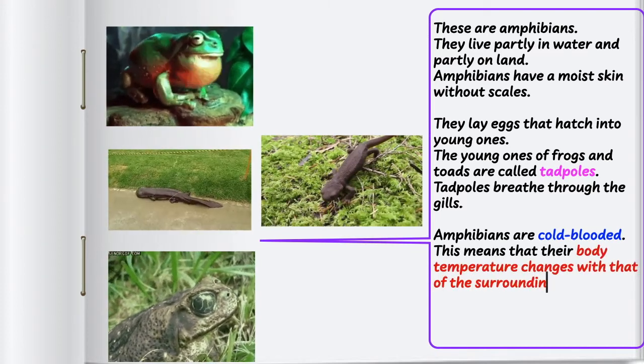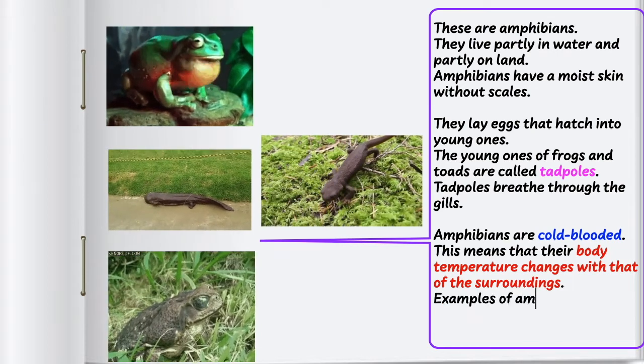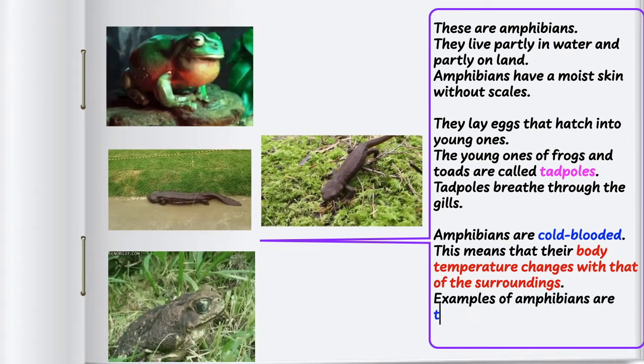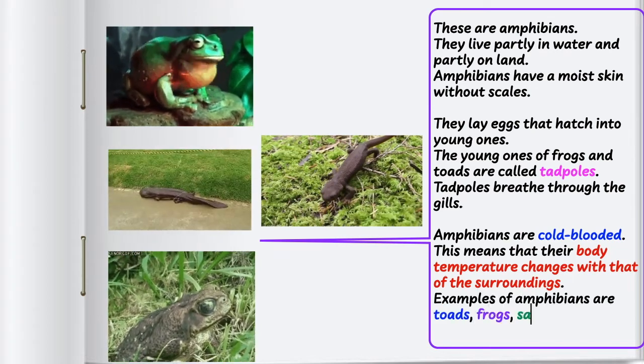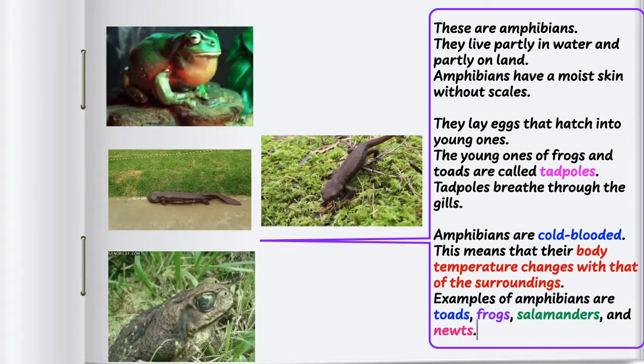Examples of amphibians are toads, frogs, salamanders, and newts.